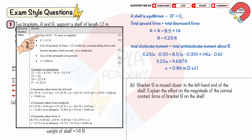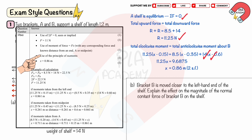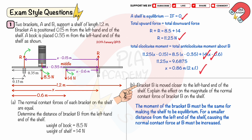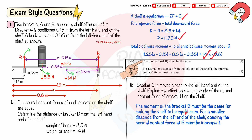You get five marks for: use of resultant force equals zero; normal force R equals 11.25 N; use of moment equals force times perpendicular distance from a suitable pivot; use of the principle of moments; and correct distance of 0.86 m. Part B: If bracket B is moved closer to the left-hand end, the moment at B must remain the same for equilibrium. For a smaller distance from the left end, the normal contact force at B must increase.